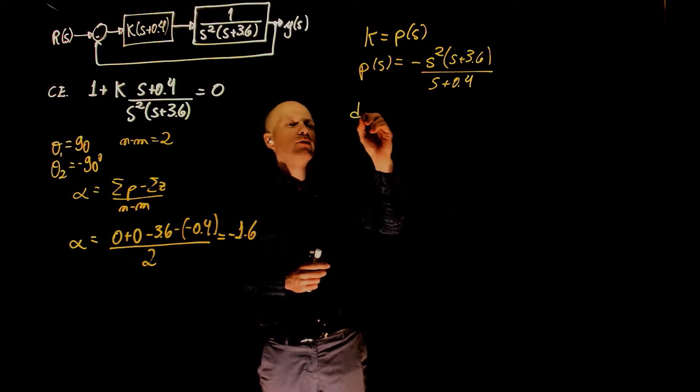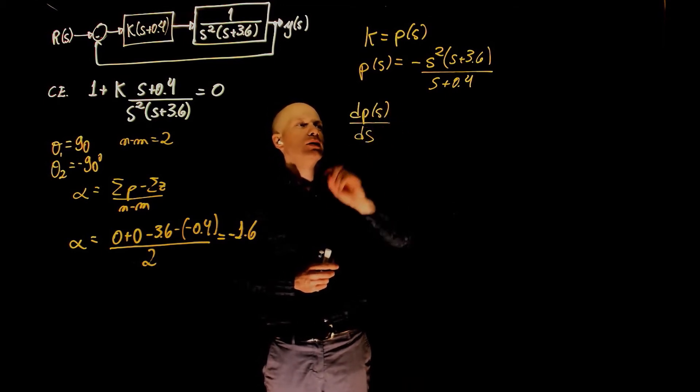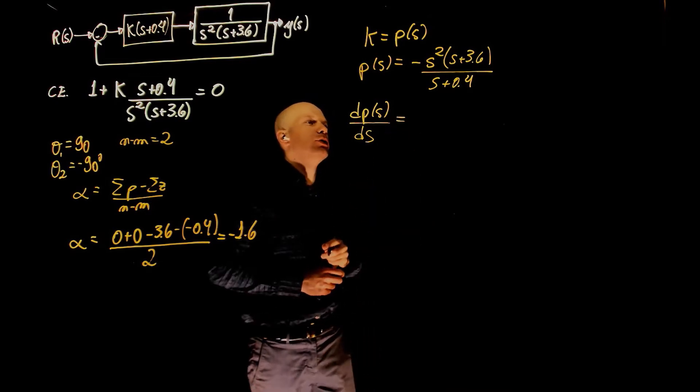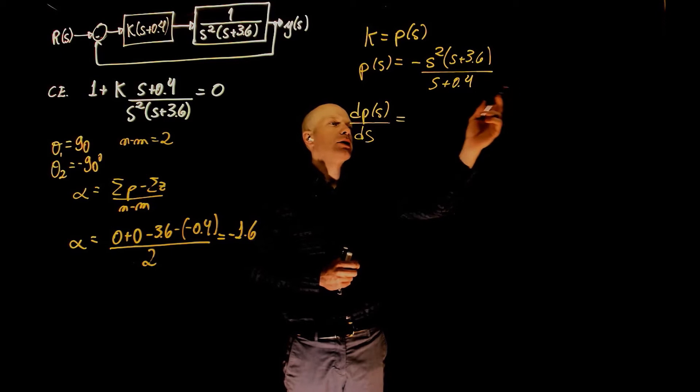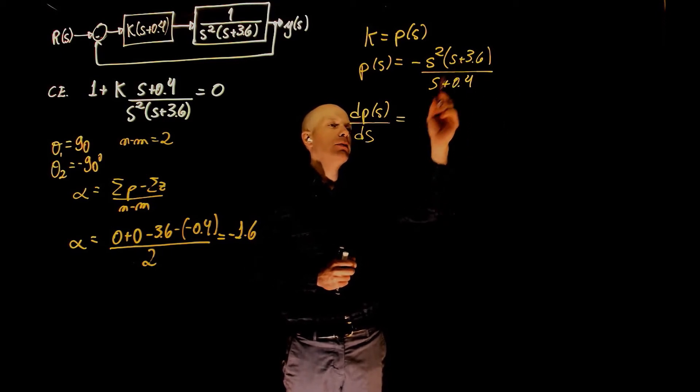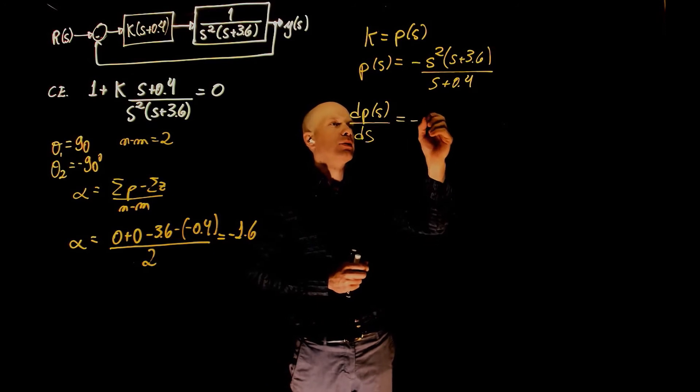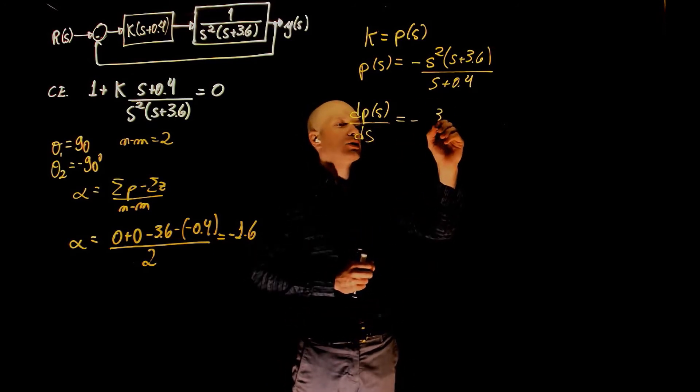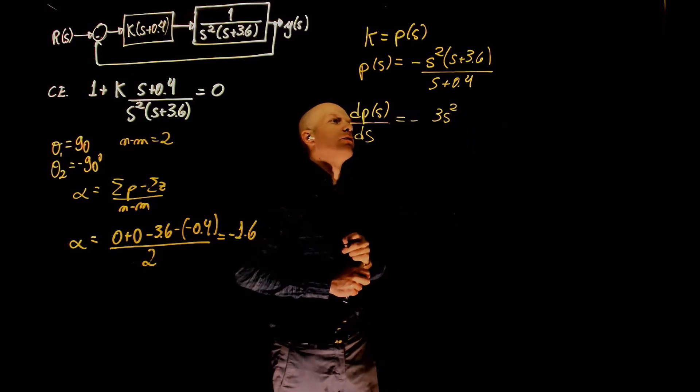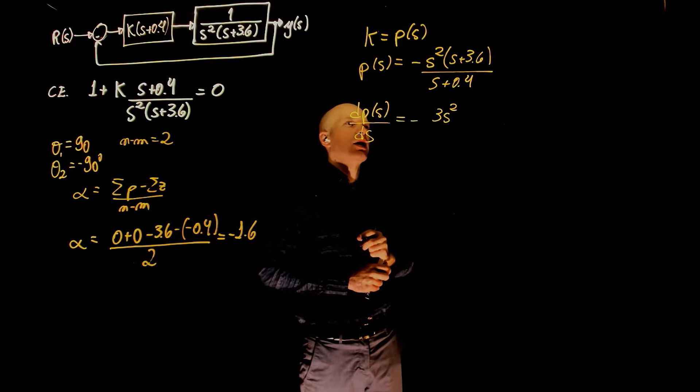Now, we need to take the derivative of p of s with respect to s and set that to zero. The derivative here is the derivative of the top times the bottom, minus the derivative of the bottom times the top divided by the bottom squared. So, you have negative, negative, and the top is s to the power of 3, so that's 3s squared, plus 3.6 times s squared,